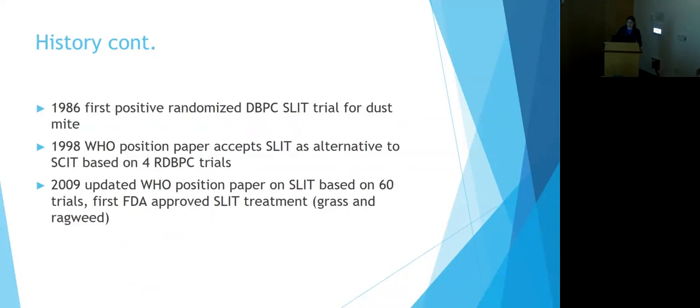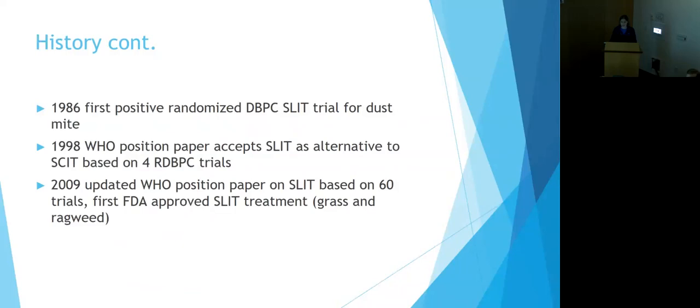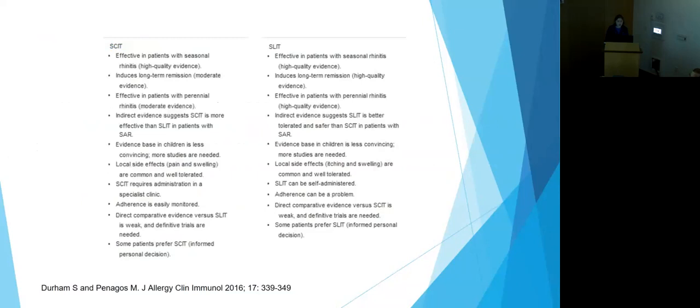So in 1986, the first randomized double-blind placebo-controlled trial for sublingual for dust mite happened. And then in 1998, the World Health Organization published a position paper that it was accepting SLIT as an alternative when compared to SCIT based on four trials. And this was updated in 2009 based on 60. And then in the same year, the FDA first approved sublingual treatment in the United States for both grass and ragweed.